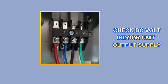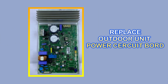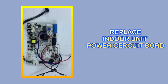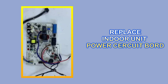If the indoor unit is providing DC output supply and you are still getting this error, then you will have to replace the PCB of the outdoor unit. If the indoor unit is not providing output supply, then you have to replace the power circuit board of the indoor unit. After that, this error will be completely fixed.